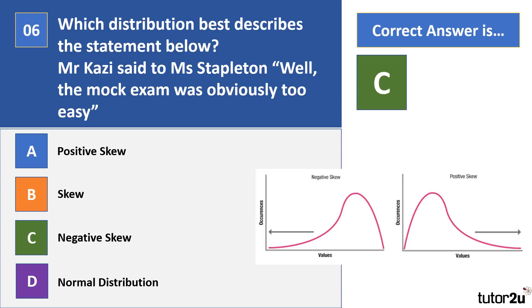On the positive skew, again the mode is the highest point in our peak, but on the positive skew the mode is at the low end of the values. So this kind of skew would occur if the exam was too hard, and it would show us lots and lots of people got really low scores on that.